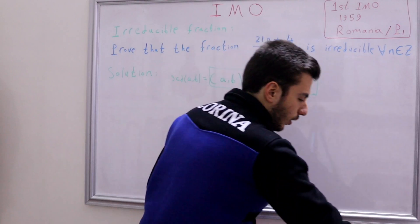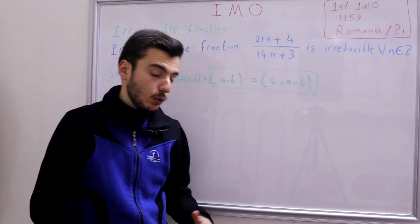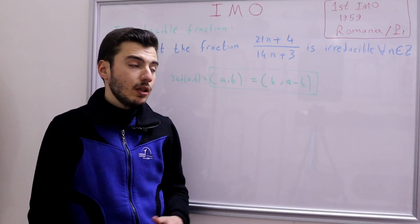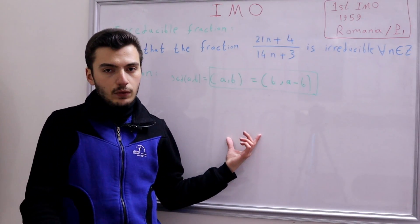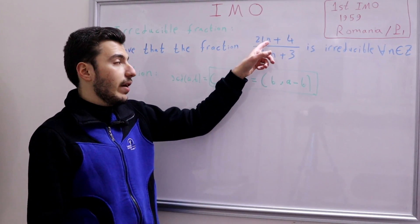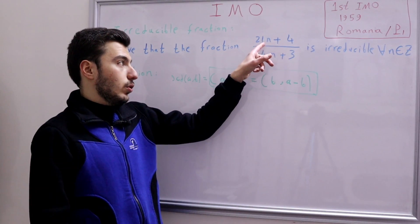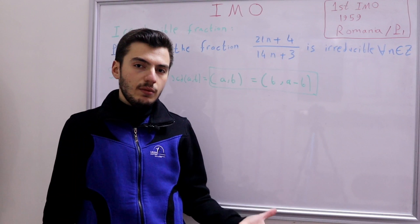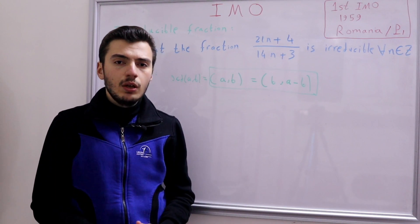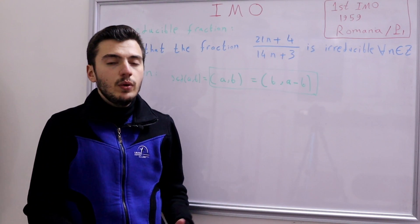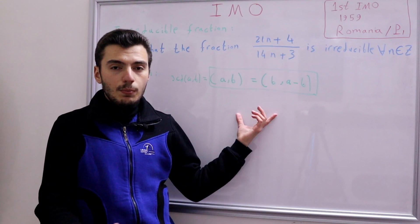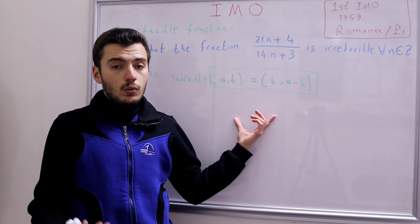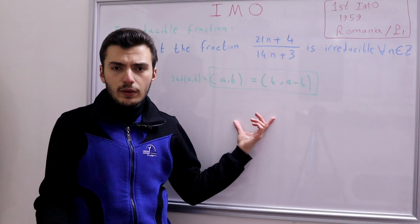We've discussed how to find the GCD of two numbers, but here we don't have plain numbers — we have 21n + 4 where n is a variable. Can we do the same? Yes — we can apply this property for any two polynomials to find their GCD. For example, if p(x) = (x−2)(x−3) and q(x) = (x−2)(x+1), their GCD is (x−2).